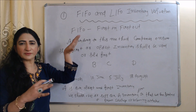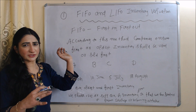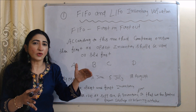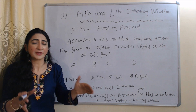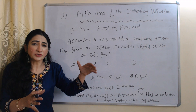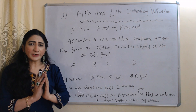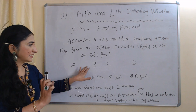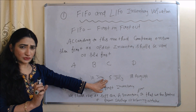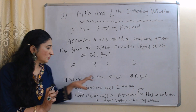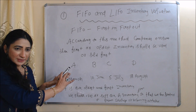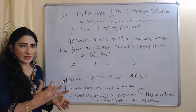First, we are going to talk about FIFO and LIFO inventory valuation. FIFO stands for first in first out. According to this method, companies ensure that their first and oldest inventory should be used or sold first. For example, we have four types of inventories: A, B, C and D. We acquire A on 14th March, B on 10th June, C on 5th July and D on 18th August. So here A is our oldest and first inventory. According to this method, we should use and sell our A inventory first so that we can protect it from spoilage or becoming outdated.